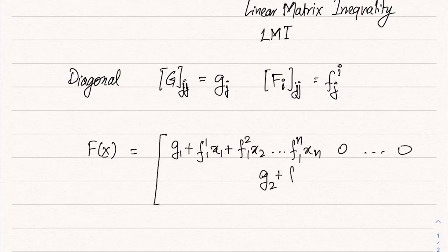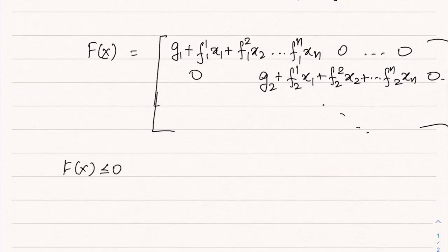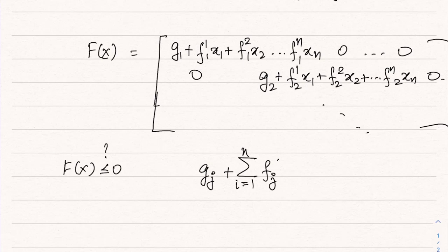The second diagonal entry would be g2 plus f2,1 x1 plus f2,2 x2, all the way till fn,2 xn, and the rest would be zeros — it is a diagonal matrix. For a diagonal matrix, requiring it to be negative semi-definite is equivalent to saying each diagonal entry is negative, since the eigenvalues of a diagonal matrix are its diagonal entries. So the constraint becomes: g_j plus the summation over i from 1 to n of f_{j,i} times x_i is less than or equal to zero.